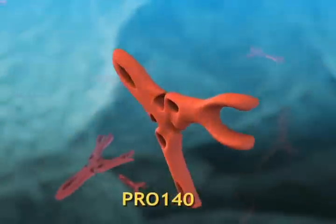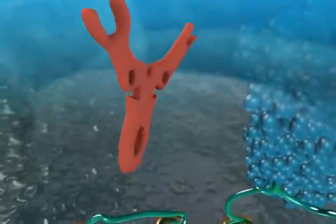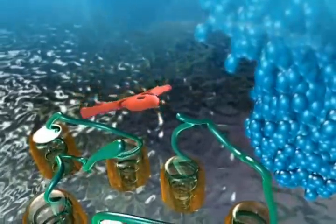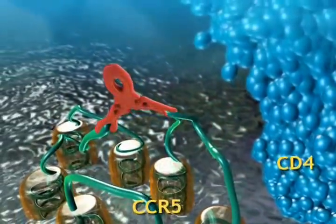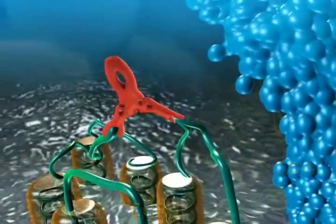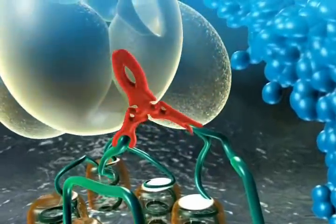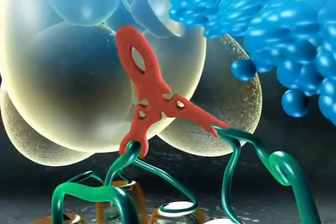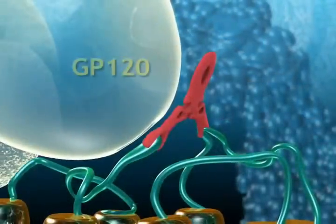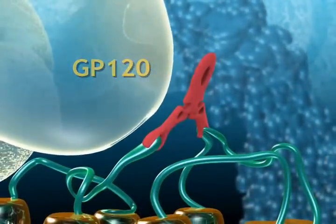Pro140 is a monoclonal antibody that attaches to the same portion of the CCR5 co-receptor to which HIV normally binds. In this way, Pro140 protects healthy cells from infection by physically blocking the virus from completing the second step in the entry process.